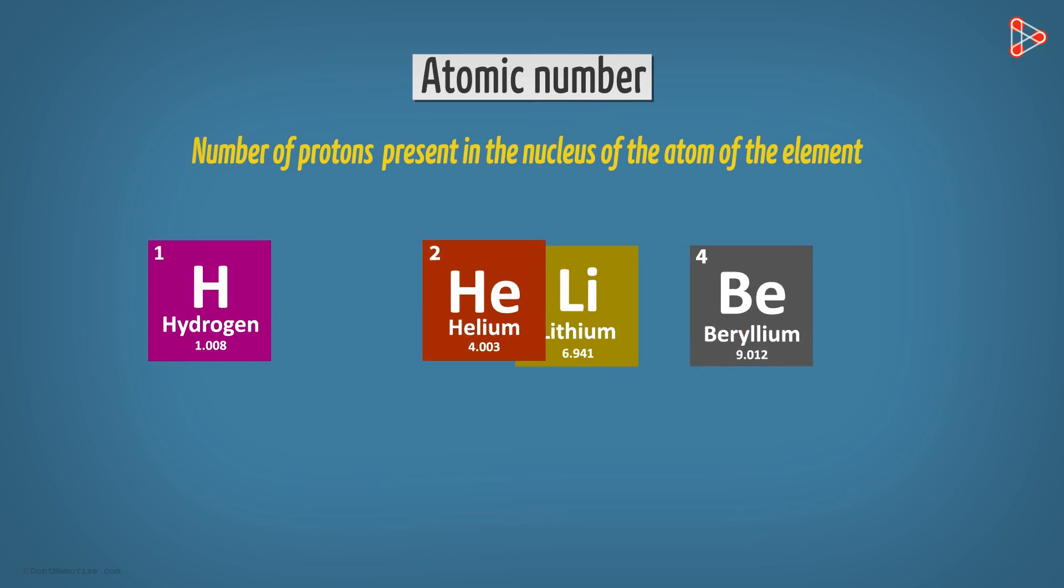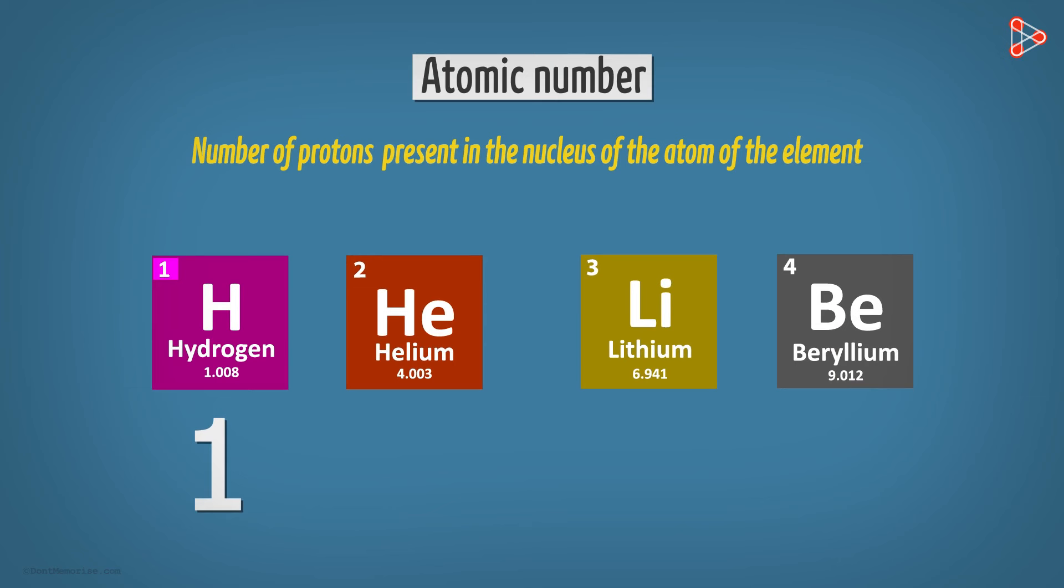For instance, let us consider the first four elements in the table. So we get atomic numbers of Hydrogen as 1, Helium as 2, Lithium as 3, and Beryllium as 4.